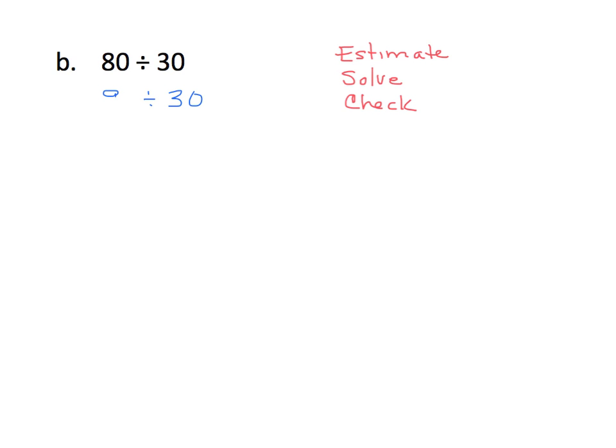Well, 80 is closest to 90. So 90 divided by 30 is 3. Let's set up our problem here. We are going to put our dividend, 80, under the tableau, and our divisor outside.